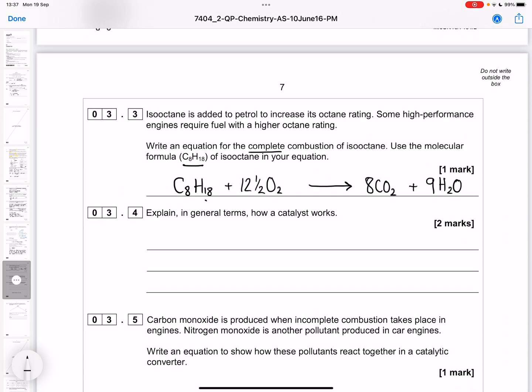It says explain in general terms how a catalyst works. In general terms, what is a catalyst? A catalyst is something that is not going to affect the enthalpy change of our reaction. It's going to provide us with a route that's slightly different with a lower activation energy. We're going to provide an alternate reaction route which has a lower activation energy.